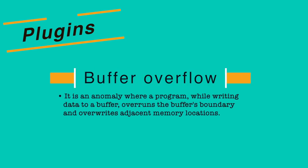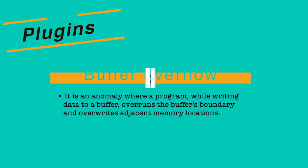A buffer overflow is an anomaly where a program, while writing data to a buffer, overruns the buffer's boundary and overwrites adjacent memory. For example, if a buffer has a size of 20 bytes, a buffer overflow will exceed that boundary and overwrite adjacent memory — a violation of memory safety. When it crosses that boundary, it can execute uninvited instructions. In a buffer overflow attack, instructions can be placed beyond the boundary and those memory instructions executed.